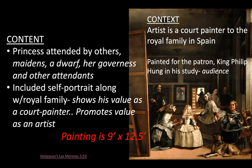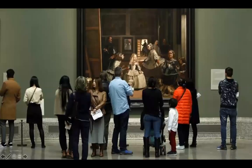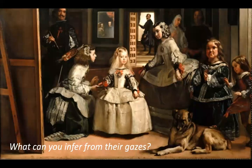Where have we seen a self-portrait before where the painter painted himself looking at you, the viewer? That was Raphael who did that at the School of Athens. We're going to continue to see this again and again with self-portraits as we move through art history. Here's an idea of the scale and size of this painting. If you were standing there as the viewer, looking at the painting, who is looking back at you? Think about the idea of gazes — all these people looking at you.